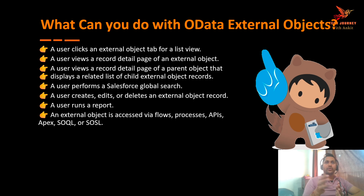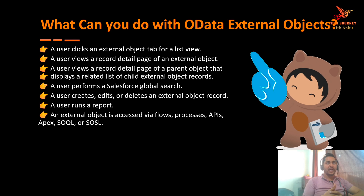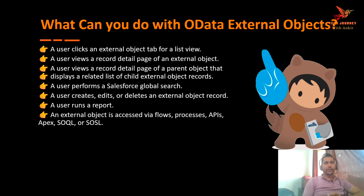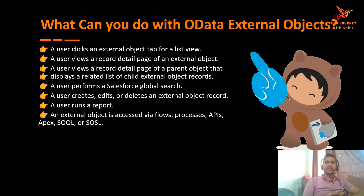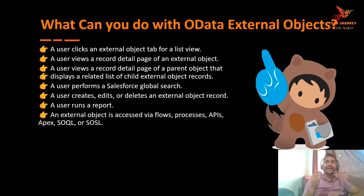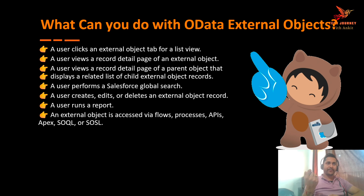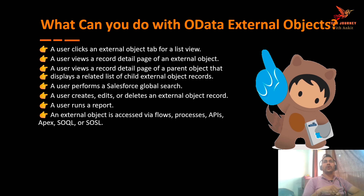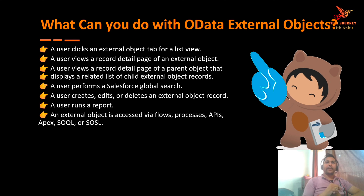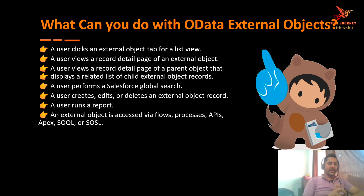From the Salesforce org you can directly modify data available on the SAP system or Microsoft SharePoint based on your access. In addition, you can use that data to run reports. Moreover, you can use the external objects via flows, processes, APIs, Apex, SOQL, as well as SOSL queries. One key limitation you should know: you cannot write triggers on the OData external object. Apart from that, you can use them in flows, processes, APIs, Apex, SOQL, and SOSL queries.